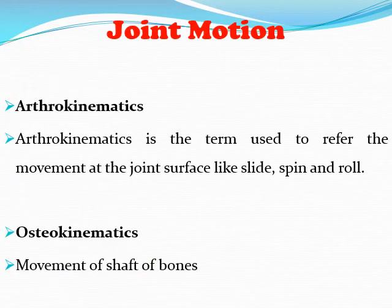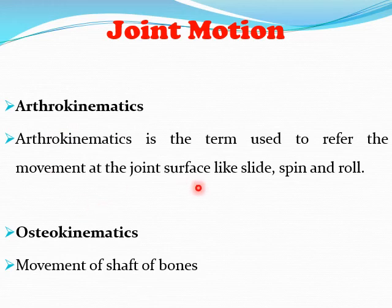Joint motion can be divided into two parts: arthrokinematics and osteokinematics. Arthrokinematics means the movement of the joint surface, such as sliding, spinning, and rolling. Osteokinematics means the movement of the shaft of the bones.